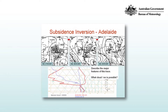Stop the video now and describe the major features of this trace. What cloud and weather do you think is possible? You should have noted that between the 27th and the 28th we get the formation of a strong inversion near 800 hPa in both the temperature and the dew point temperature. This is a change from the moist layer that existed the day before, with an inversion much higher up in the atmosphere. We now have a much shallower saturated layer just below the inversion, and so that's likely to be associated with stratocumulus cloud. It's possible that might be associated with some drizzle, although given the depth of cloud it's probably unlikely in this case.